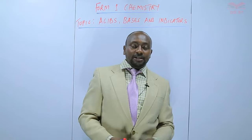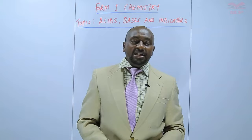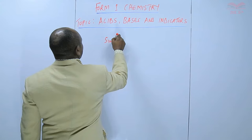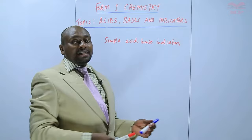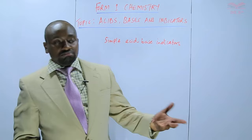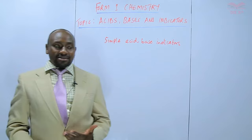Today we are going to look at simple acid-base indicators — these are some of the indicators that we can make ourselves. There are some indicators that are commercially available, bought from chemistry shops. But there are also some that we can prepare ourselves, and these ones are prepared from plant extracts, from leaves, from flowers, and so on.